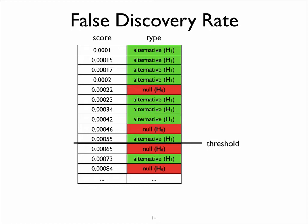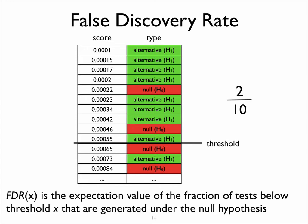In this somewhat unrealistic scenario, somebody has told us which statistics adhere to the alternative hypothesis and which adhere to the null hypothesis. Normally we are in scenarios where we don't know this — we are trying to design a threshold that in some way controls the number of null hypothesis tests above this threshold. For this particular threshold, we record that 2 out of 10 hypotheses are generated under the null hypothesis. The false discovery rate would be the expected fraction of tests below the threshold that are generated under the null hypothesis. If we repeated this experiment and found 2 out of 10 on average above this threshold, we would conclude the false discovery rate of this particular threshold is 20%.